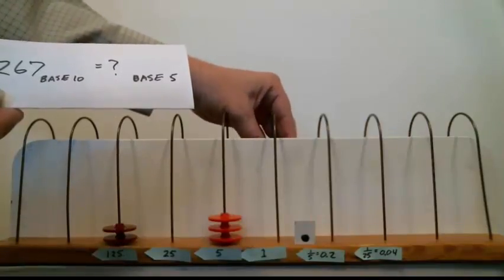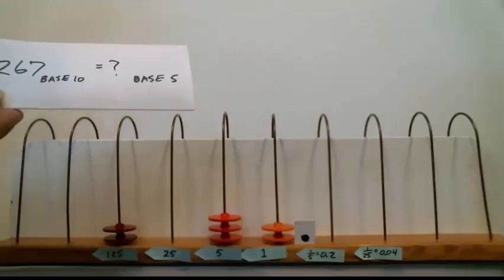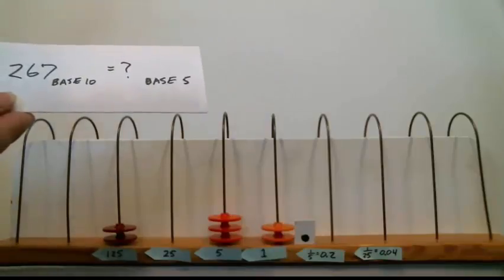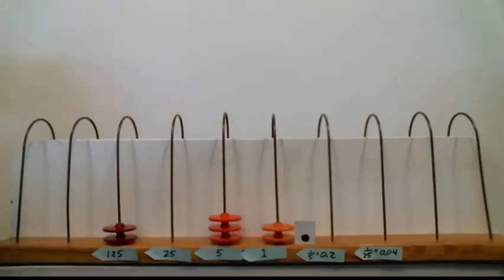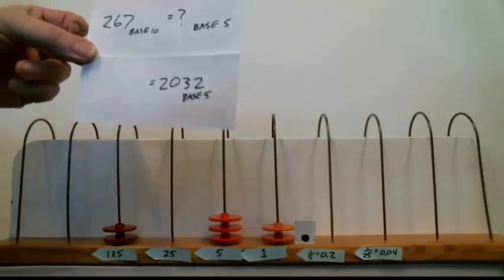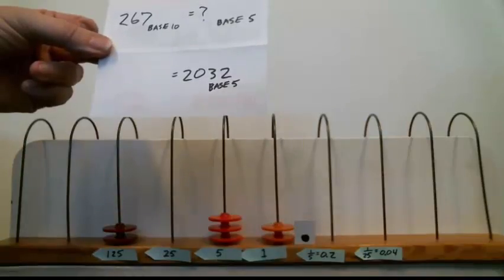I'm at 265, 266, 267. So the number 267 in base 10, if I convert that into base 5, should be 2032. Ah, there it is. 2032 in base 5 is 267 base 10.